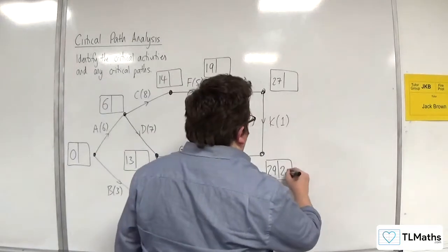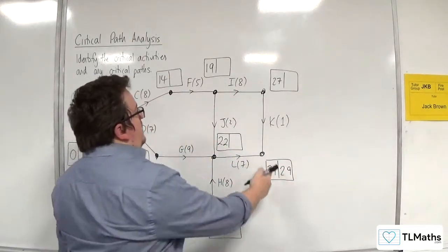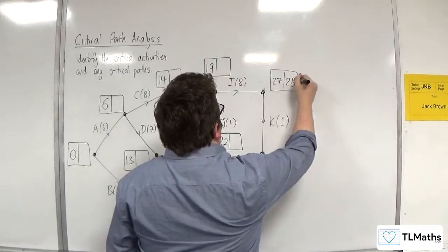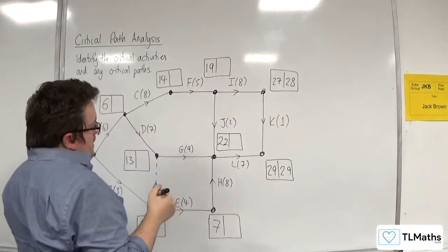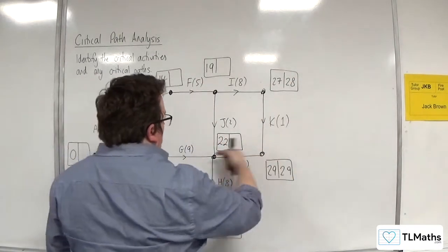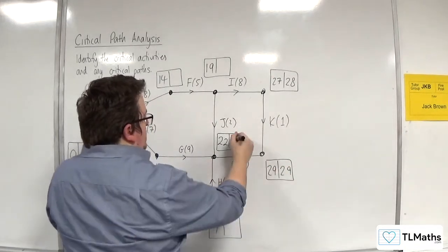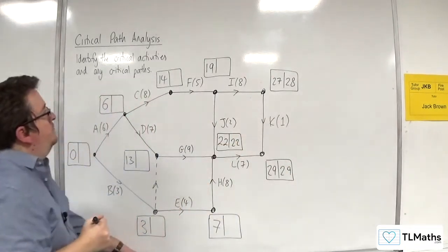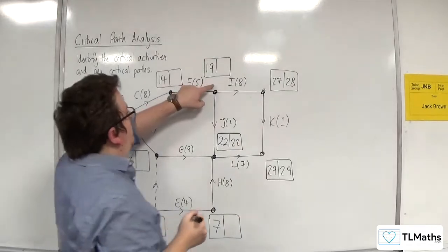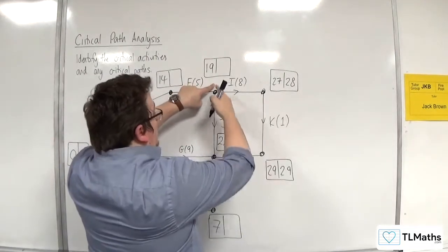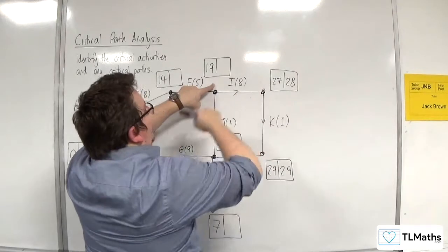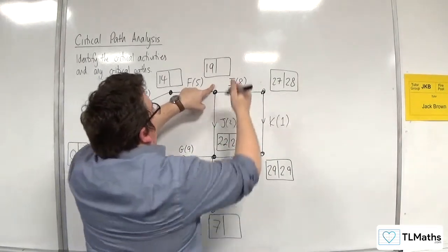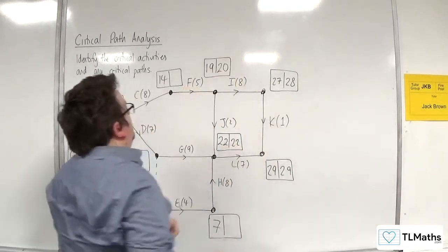Now the backward pass. So that goes 29. 29 take away 1, so 28. So we've only got one route going back. So 29 take away 7, so that's 22. So for this one, we've got 22 take away 2 is 20, 28 take away 8 is 20. Both the same, so I'll have to put 20 there.